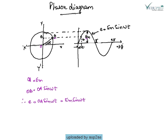OB can be given by OA sin omega t. OB is equivalent to E sin omega t.